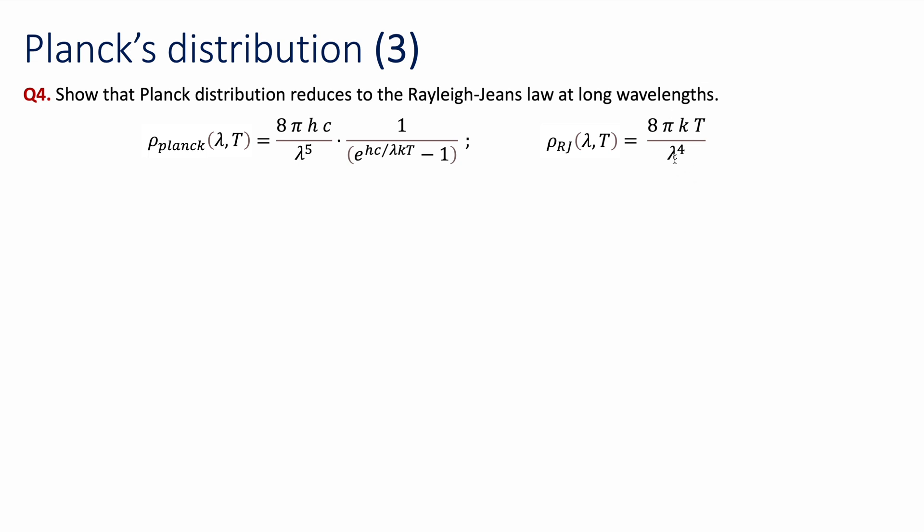Now, 1 over lambda to the power of 4, when these wavelengths become really short, the value of this distribution goes really high, and that's why it fails at short wavelengths. It doesn't have a maximum, it just keeps increasing as you make wavelengths shorter and shorter.